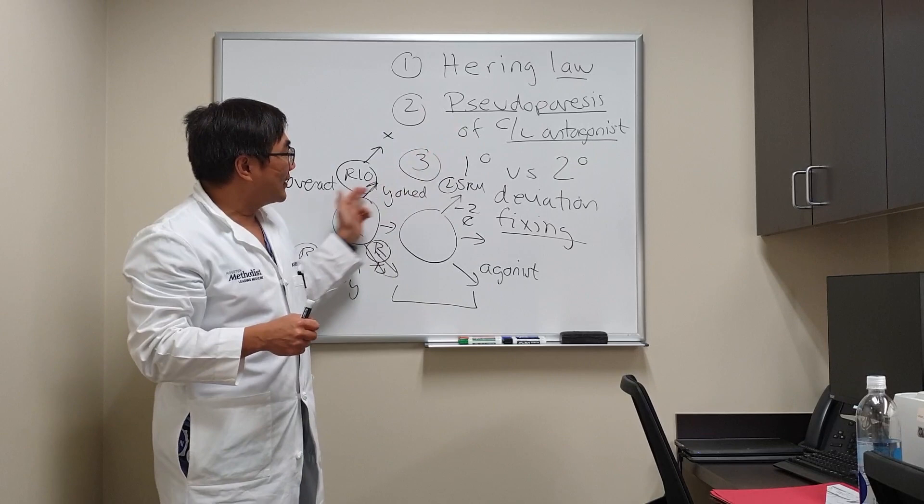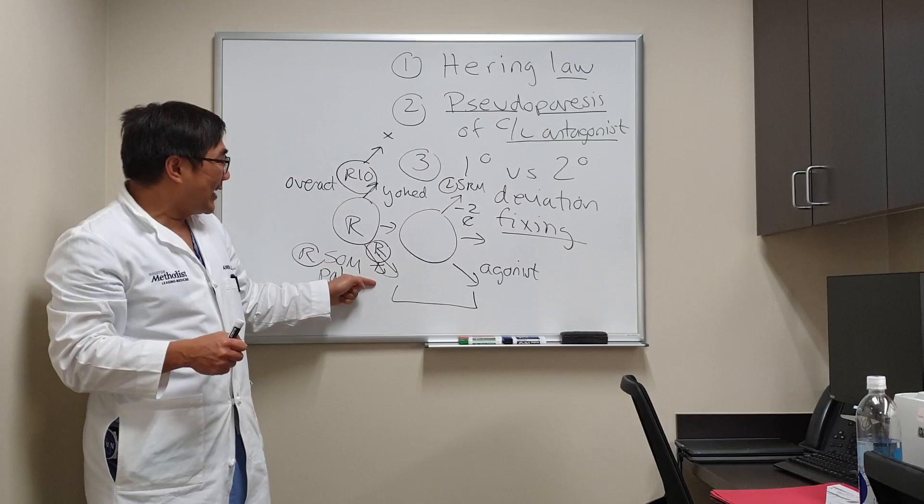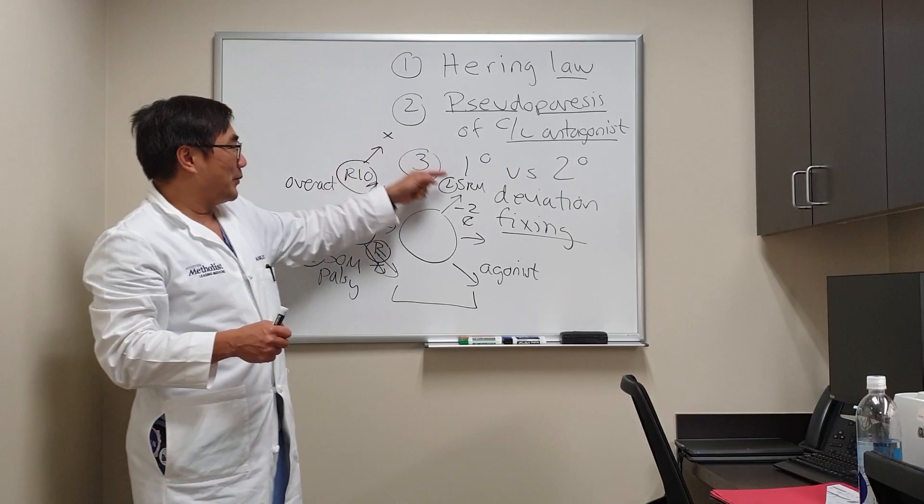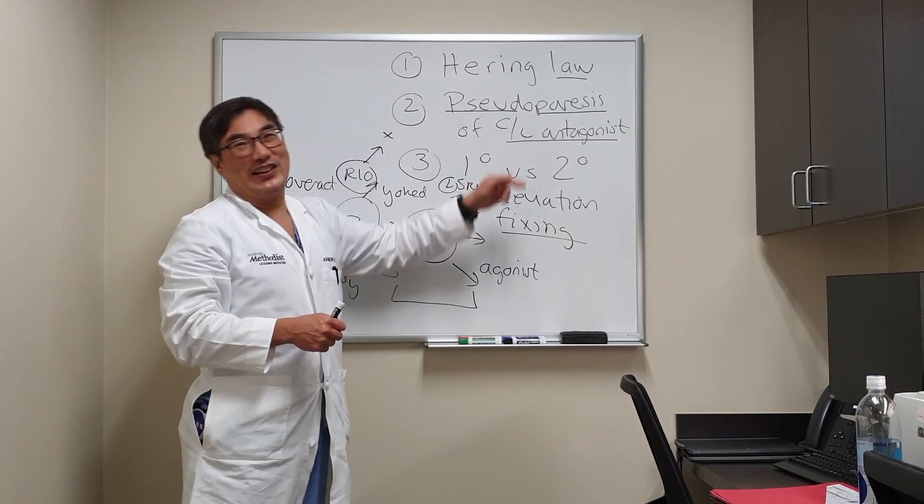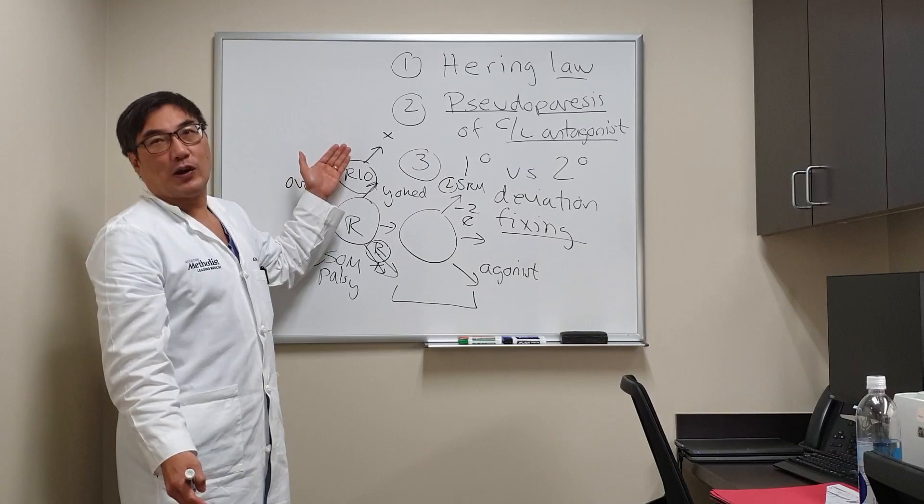It's just yoked to the overacting right inferior oblique muscle — that's a pseudoparesis of the contralateral antagonist. Because the right superior oblique was weak, its ipsilateral antagonist, the right inferior oblique, is strong, which means its contralateral antagonist appears weak. But it's pseudo-weak — it's not really weak, it just looks weak because the right eye is already on the target.